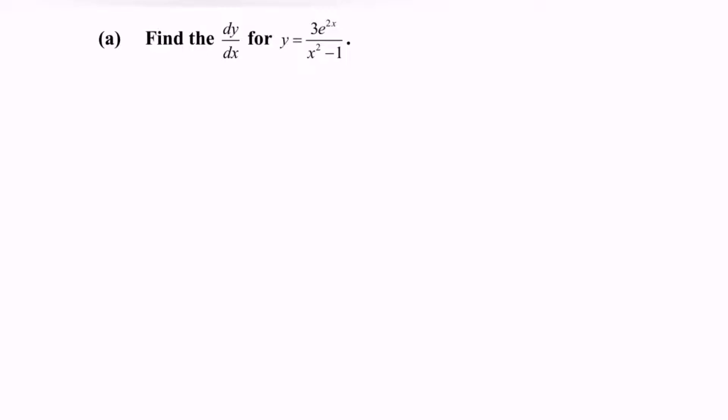Now, notice that here we are going to use the quotient rule. So let's denote the situation as u for the numerator and v for the denominator.